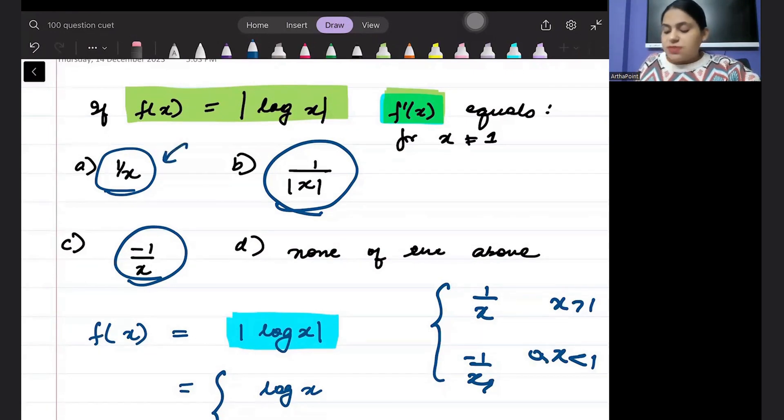Right? So suppose you say ma'am answer should be a, but what if x is between 0 to 1? What if x is between 0 to 1? Then it should be -1/x.